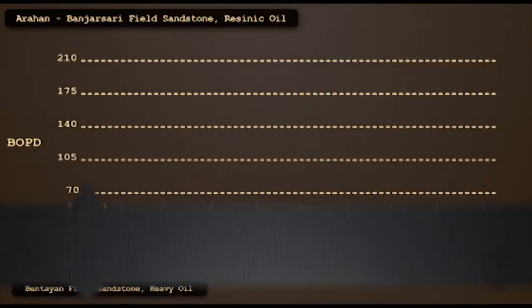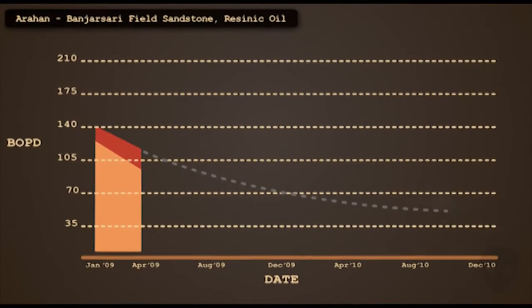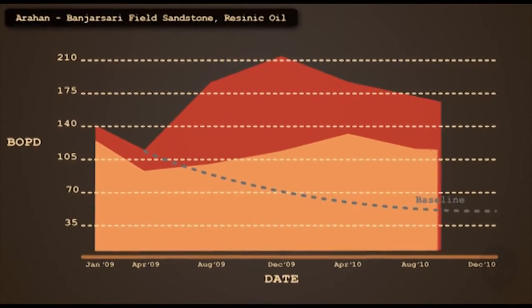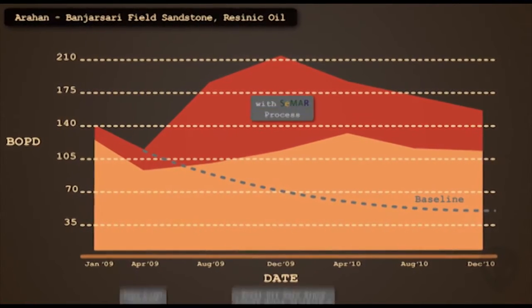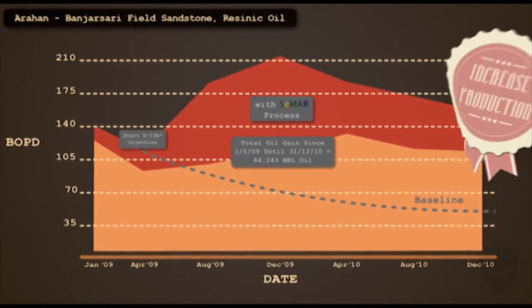Arhan and Banjasari field that located in Sumatra also have a reservoir with oil properties with sandstone rock type. Its oil production increased significantly after injected by SMAR with huff and puff method.